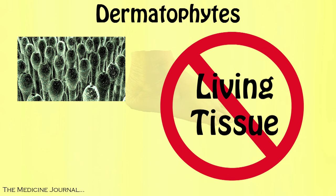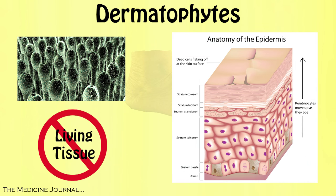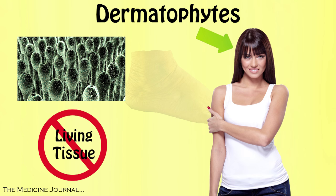First, no living tissue is invaded by the fungi. Instead, they colonize the dead layers of tissues that have large amounts of a protein called keratin. Hair, skin, and nails all have large amounts of keratin within them.